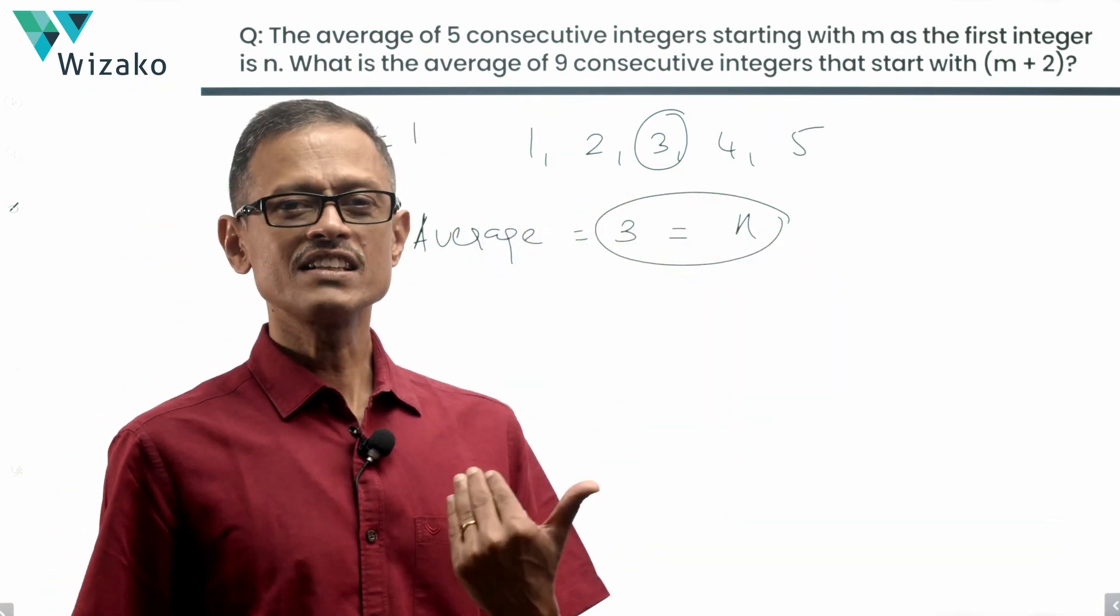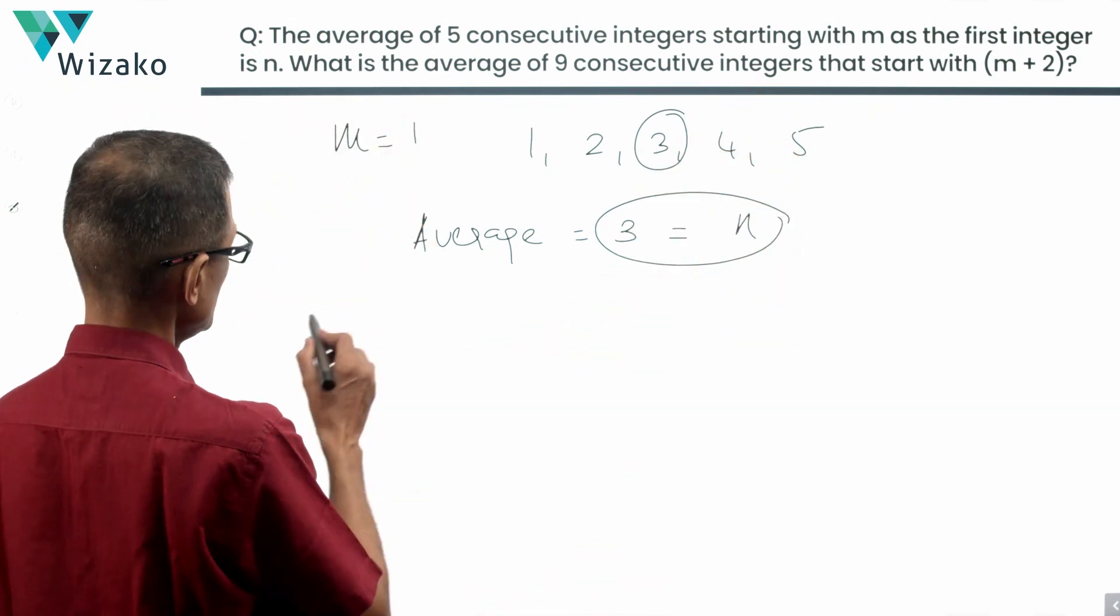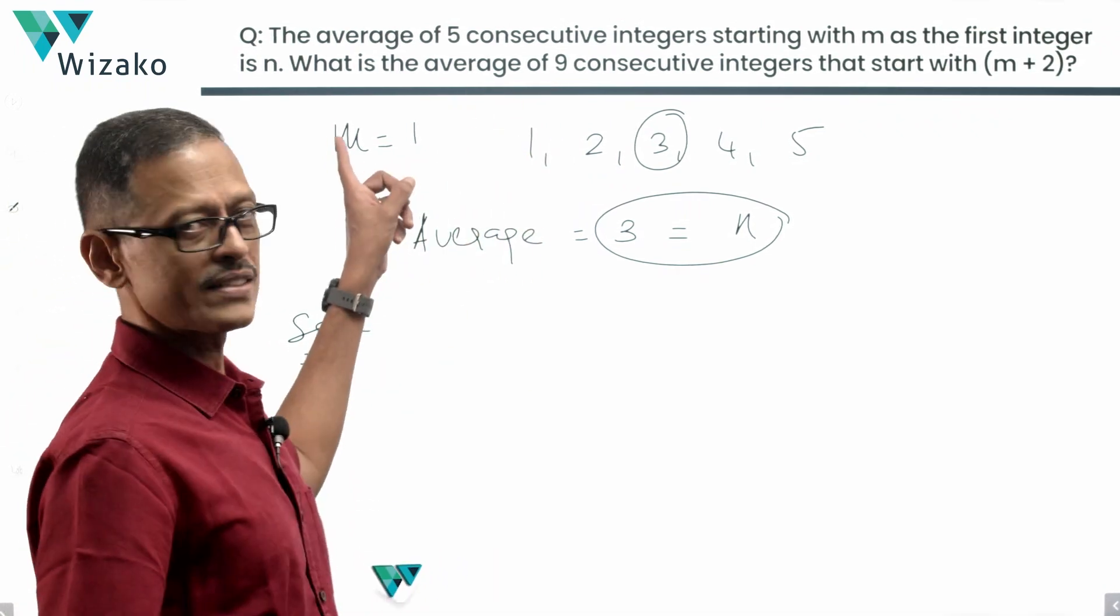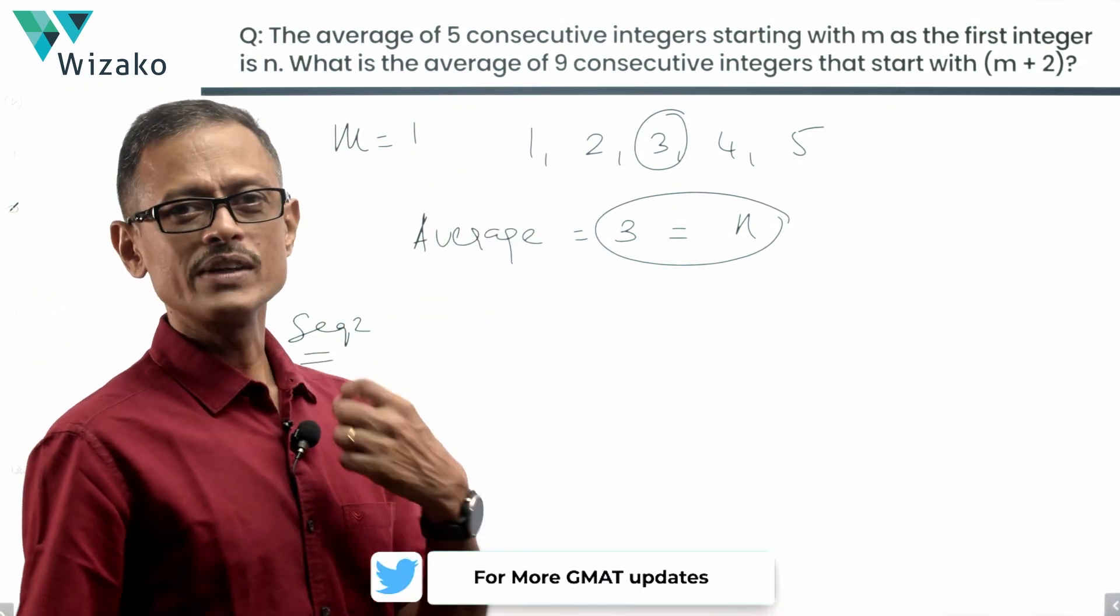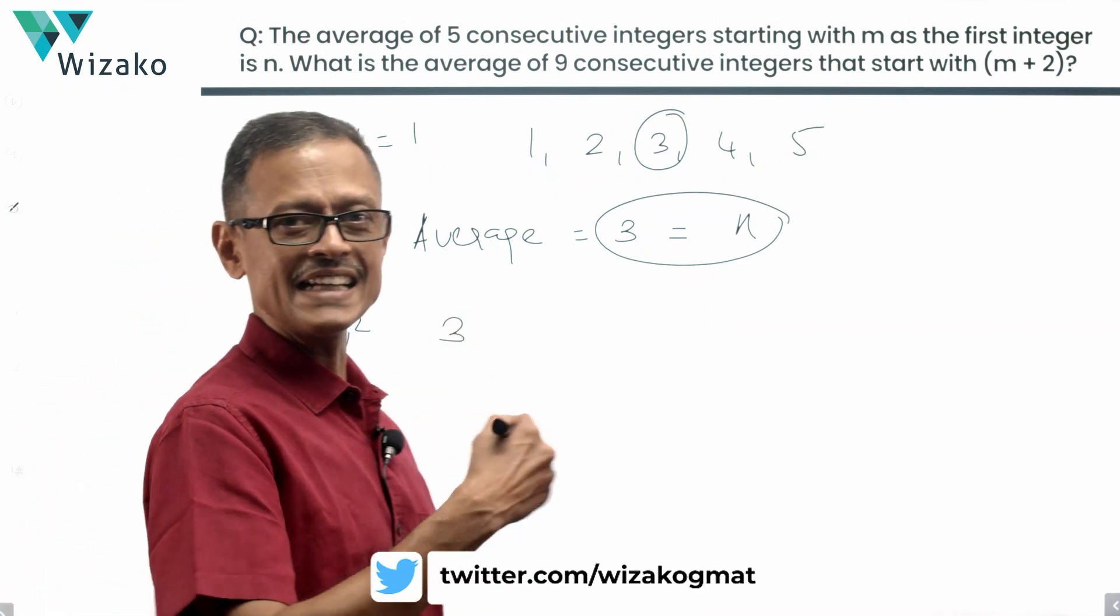What's the second sequence? The second sequence has got nine numbers. Where does it start from? It starts with m plus 2. So sequence 2 we will call it. This is going to start with m plus 2. What is m for us? m is equal to 1. So m plus 2 is going to be equal to 3. The second sequence starts with 3. We are going to write nine consecutive numbers.